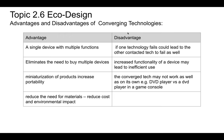Looking at advantages and disadvantages of converging technology: it's generally better to have multiple functions in one device than separate devices. For example, a scanner-printer-copier combines three technologies into one. The advantages are a single device with multiple functions, eliminating the need to buy multiple devices, miniaturizing products, and increasing portability.